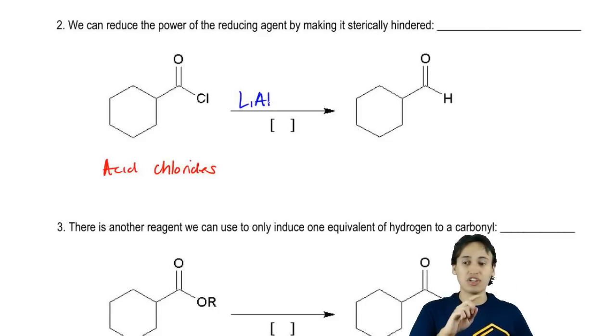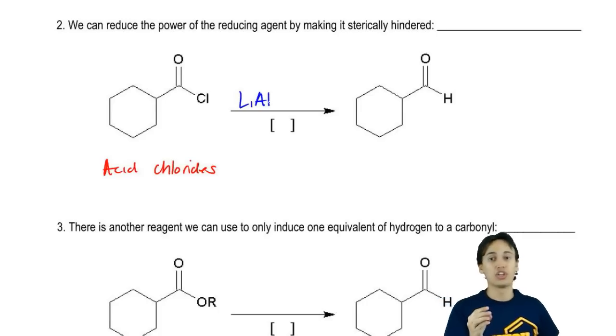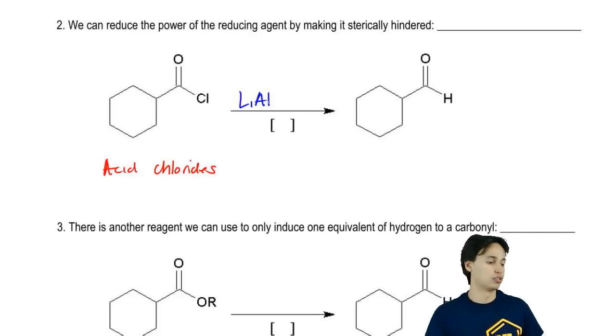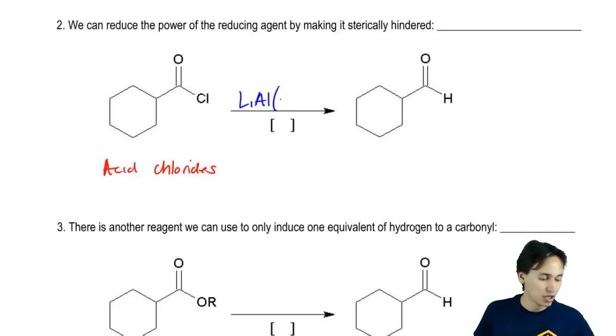But then this is where it gets weird. Instead of having four hydrogens, three of those hydrogens are replaced with what we call tert-butoxy groups. Then we draw parenthesis, O-t-butyl3H.